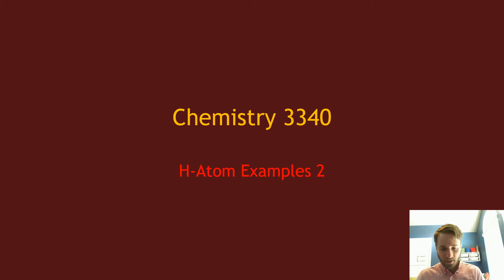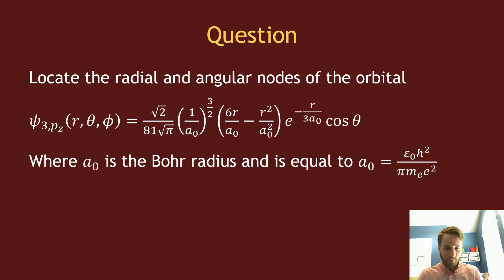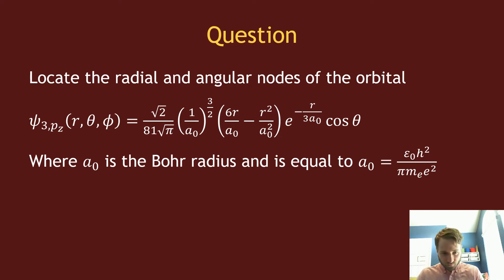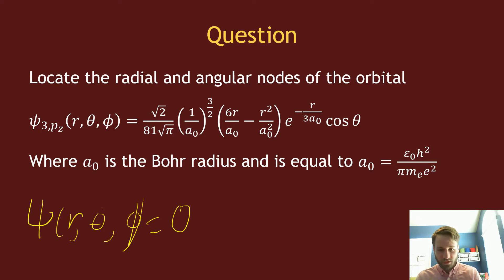Alright, welcome everybody. We're going to do some more examples with the hydrogen atom. The example we're looking at today involves the wave function — specifically finding where the radial nodes and angular nodes are for the 3p_z orbital. To find where a node is, I need to find when ψ(r, θ, φ) equals zero, because a node is defined as when a function equals zero.